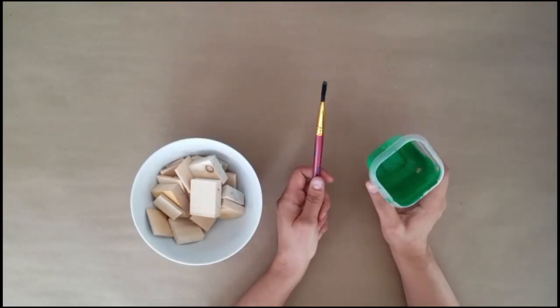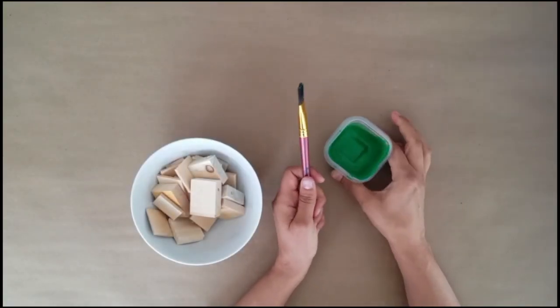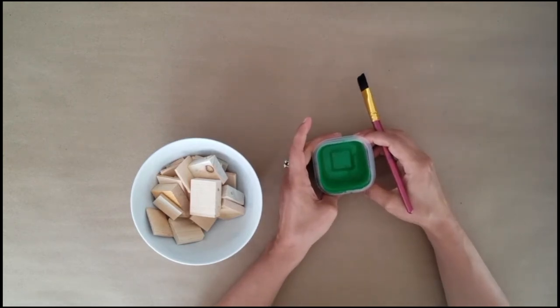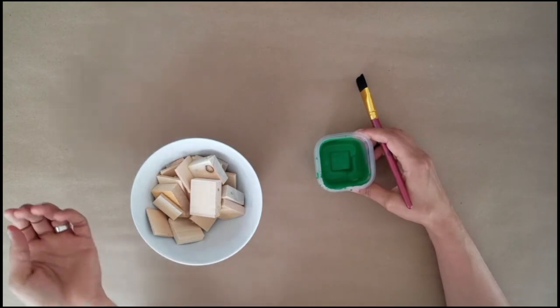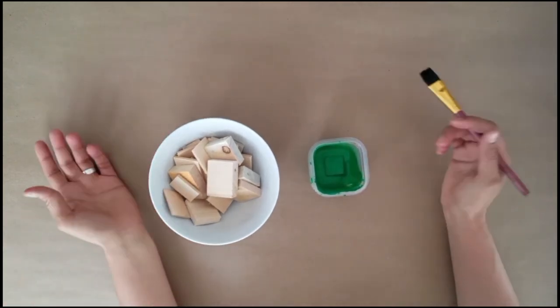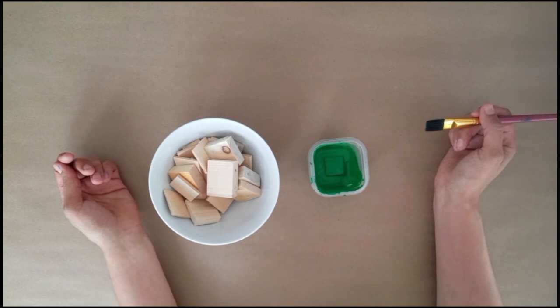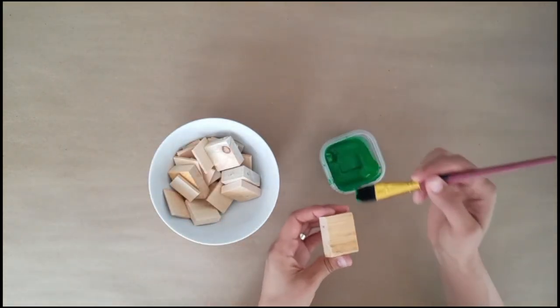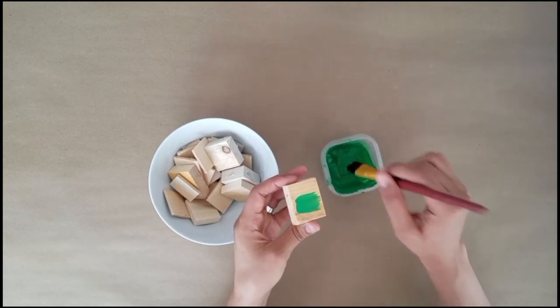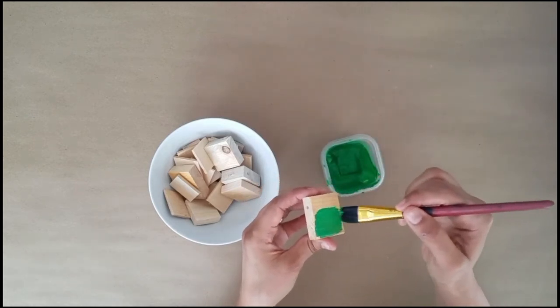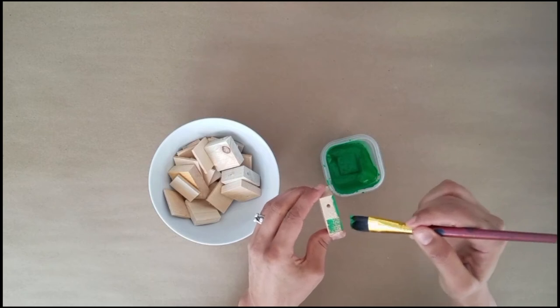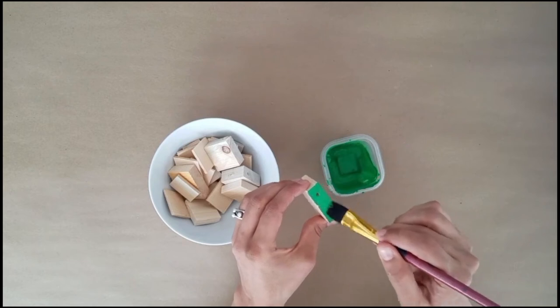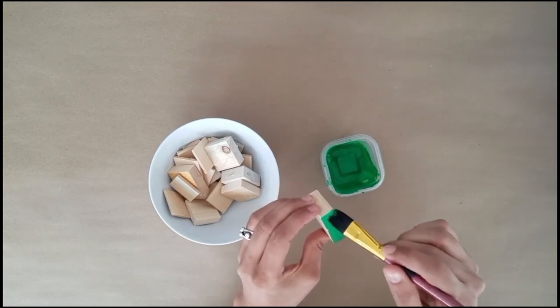Step three is to choose a color. Nevelson's sculptures were monochromatic, meaning the wood pieces were unified through a single color. She typically worked in black, white, or gold. I didn't have these colors on hand, so I've gone with a kelly green. So I'll take my piece of wood and apply my paint over the entire surface of the wood.